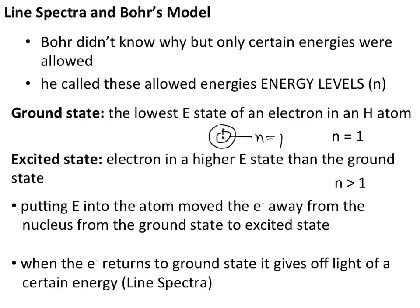To get into the excited state, energy has to be put into the atom — whether light or some energy source — to get electrons to jump up into higher energy states. When those electrons drop back down to the ground state or a lower state, light is given off in the form of photons. With a specific single atom, only specific transitions are allowed — for example, n equals 2 to n equals 1, or n equals 3 to n equals 2. These unique transitions are what leads to the line spectra.